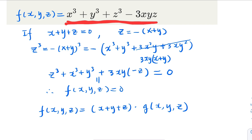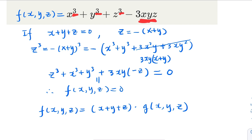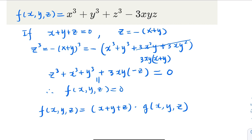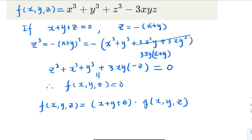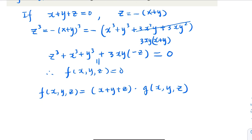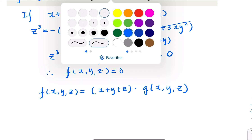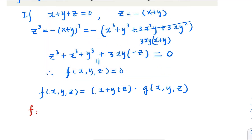Notice that each term of f is degree 3, and another important property is that you can swap x and y, or y and z, or x and z, and the polynomial remains the same. We call this cyclic symmetric. So f is degree 3 and the whole polynomial is cyclic symmetric.